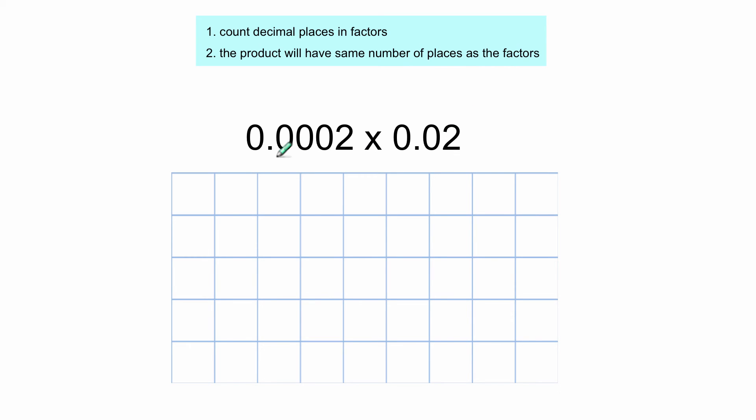And so first thing we're going to do is count the decimal places in the factors. So in this first factor, there are four decimal places. And in this factor, there are two decimal places, and that's a total of six decimal places that are going to be in the product.